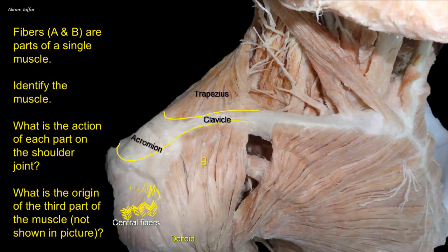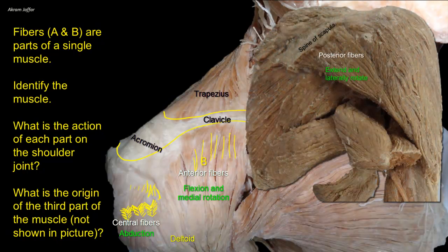The main action of the deltoid muscle is abduction of the shoulder joint. The anterior fibers, arising from the clavicle, are parallel fibers that flex and medially rotate the humerus. The middle fibers are the main abductors. The posterior fibers, arising from the spine of the scapula, are also parallel fibers that extend and laterally rotate the humerus at the shoulder joint. The anterior and posterior fibers alternate in action when swinging the arm during walking.